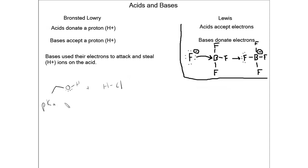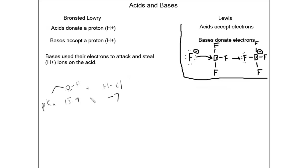So the pKa values: ethanol is 15.9, and hydrochloric acid's pKa value is negative 7. In general, the lower the pKa value is, the more acidic it is. Hydrochloric acid is clearly the stronger acid in this case. The lower the pKa value, the stronger the acid is, and the more likely that the proton will be donated. So the proton on ethanol is less likely to be donated than the proton on hydrochloric acid. So now we know that hydrochloric acid is the acid in this reaction.